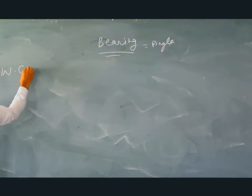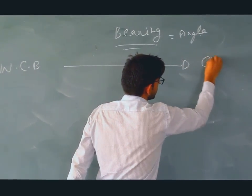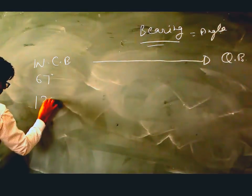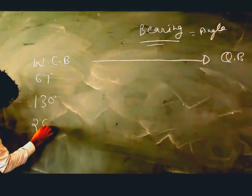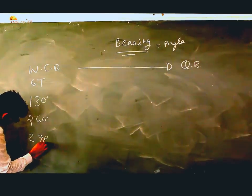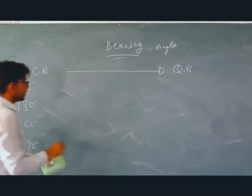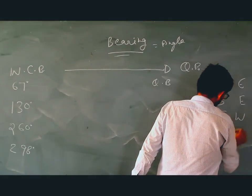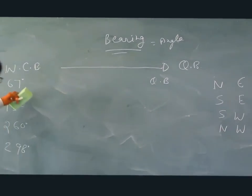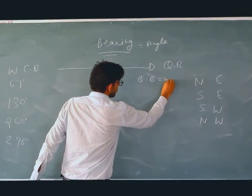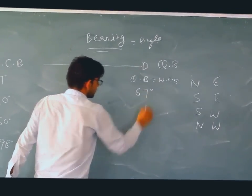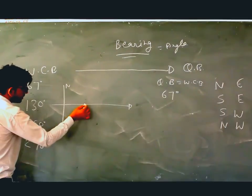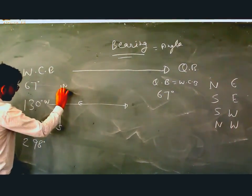Now we will convert WCB to QB. We have four examples to transform into QB. The first is 67 degrees: since 67 is in the first quadrant (0–90°), WCB equals QB, so QB is N67°E. The second is 130 degrees: 130 falls in the second quadrant (90–180°), so we apply 180 minus WCB.